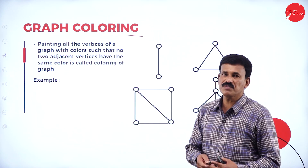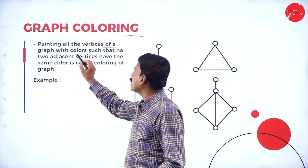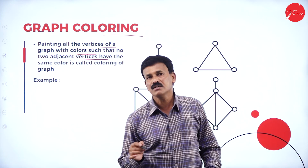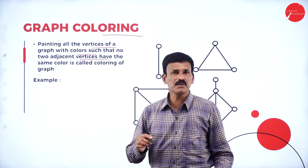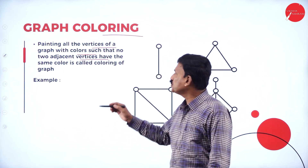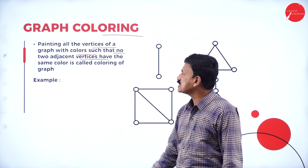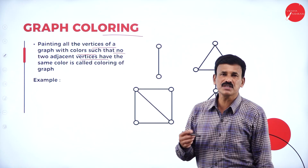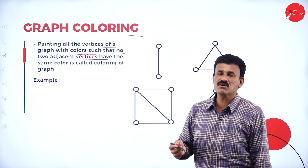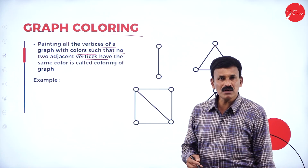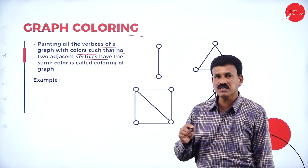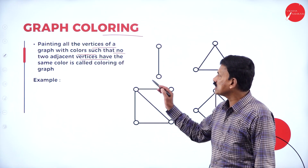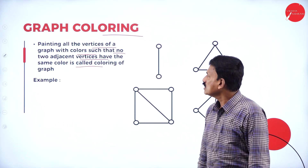What is coloring of a graph? Coloring of a graph is nothing but painting all the vertices of a graph with colors such that no two adjacent vertices have the same color. So we have to give different colors for different vertices — that is called the coloring of a graph. In general, painting all the vertices of a graph with color such that no two adjacent vertices have the same color is called the coloring of a graph.